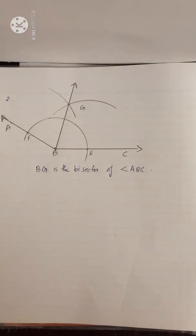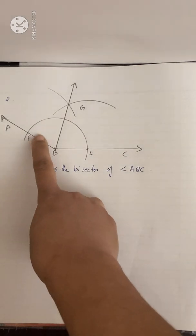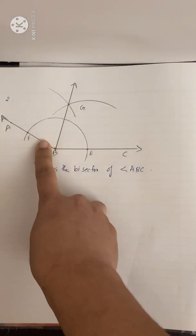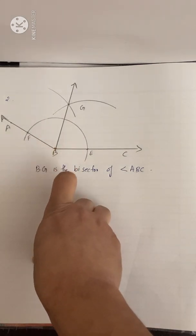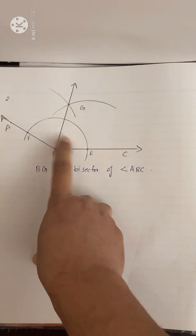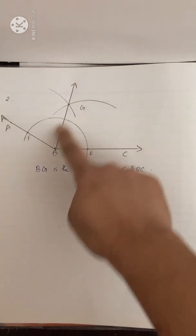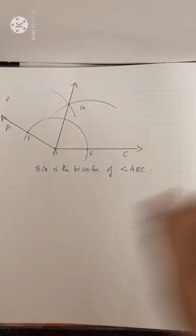The bisector means this will divide the angle into two equal parts — this part and this part are the same. Both the angles are equal.